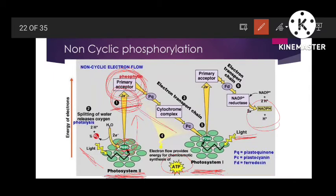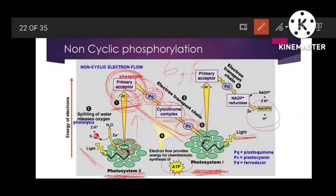These electrons are transferred into an electron transport chain. First they pass to an electron acceptor called plastoquinone, then from plastoquinone they pass over a cytochrome complex consisting of cytochrome b and cytochrome f. From the cytochrome complex, the energy-rich electrons pass to plastocyanin, another electron acceptor, and from there they finally reach photosystem 1. As the electrons pass down, energy is released and used to produce ATP by chemiosmosis.